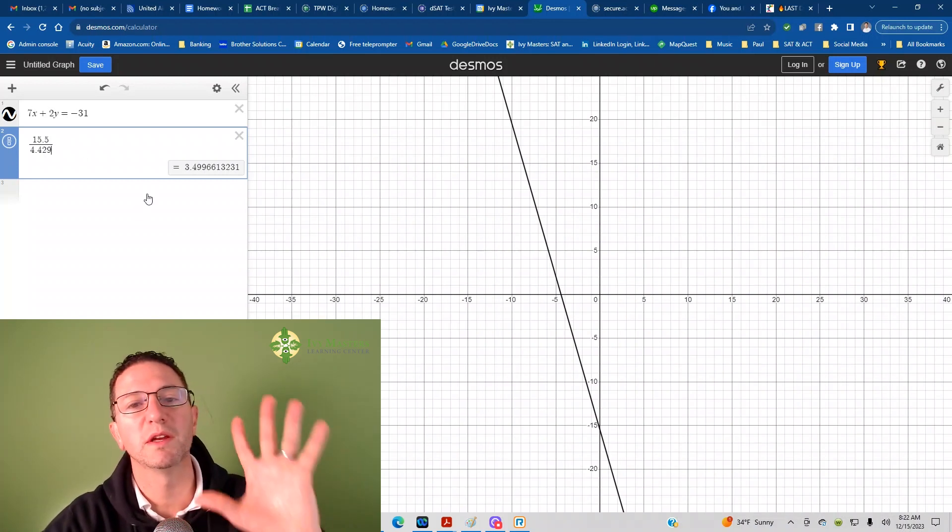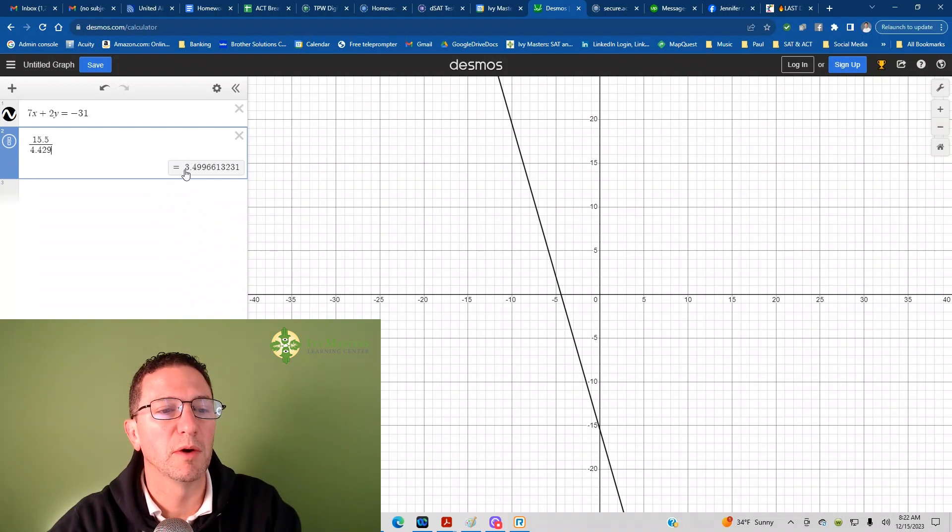Now, on the SAT, you're given five places to bubble in. So what would you bubble in? 3.4996. Actually, you know what? That's going to round off to 3.5. So we just bubble in 3.5 and move on.